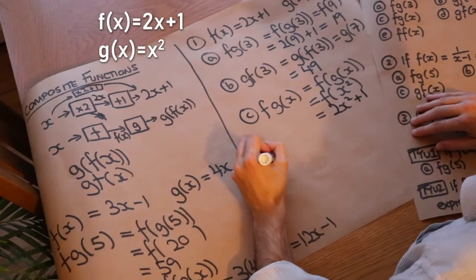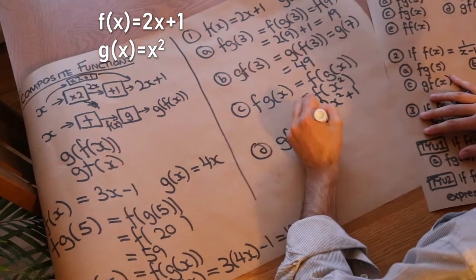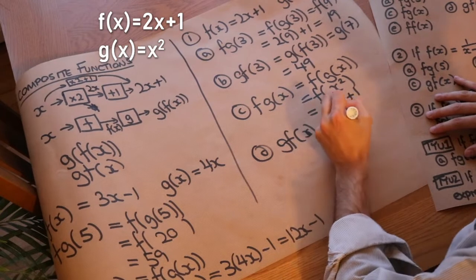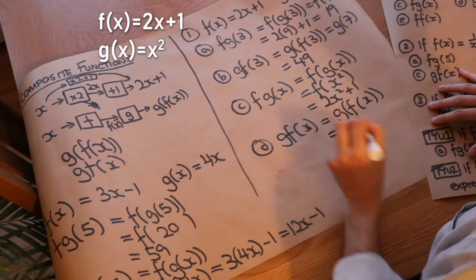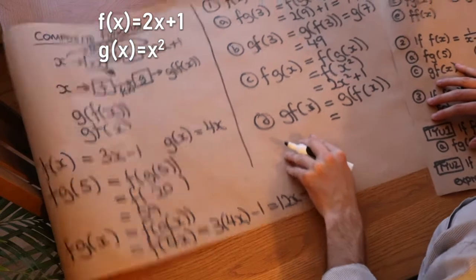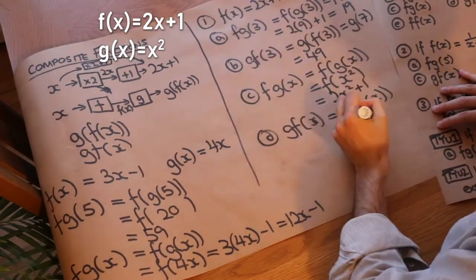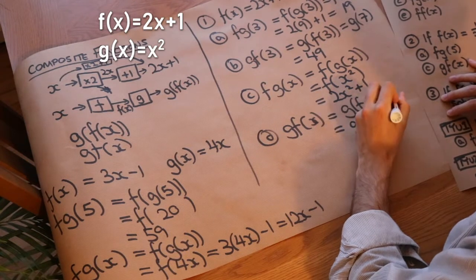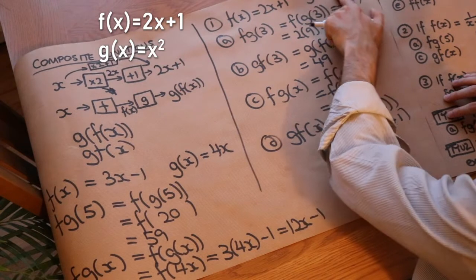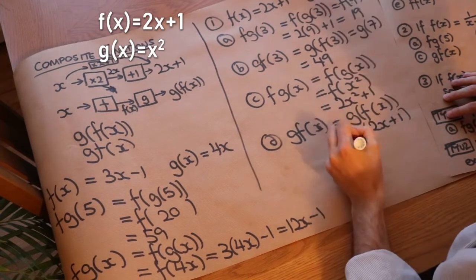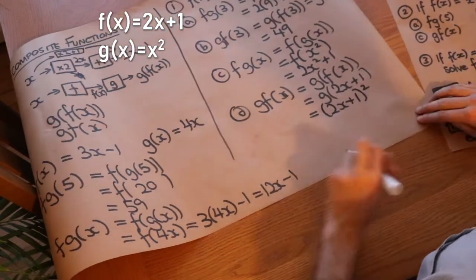Now let's find g(f(x)), swapping the order. We write g(f(x)) and replace f(x) with 2x + 1, giving g(2x + 1). Then g of (2x + 1) = (2x + 1)². I'll leave it in that form, but you could expand it out.